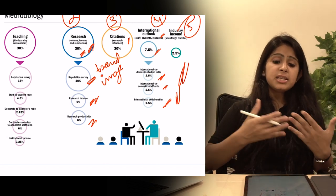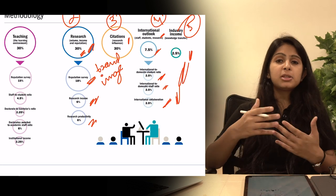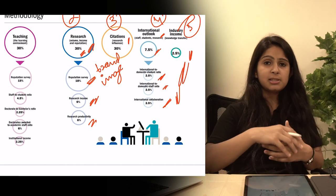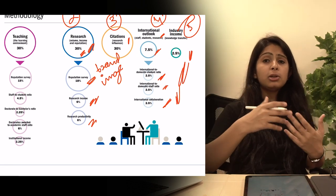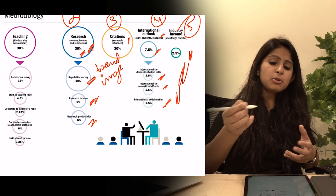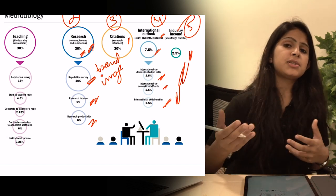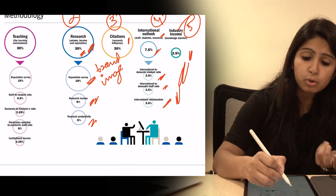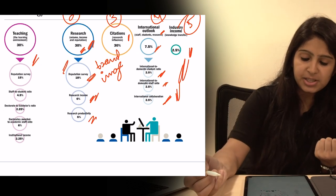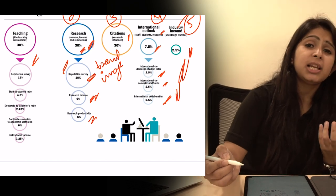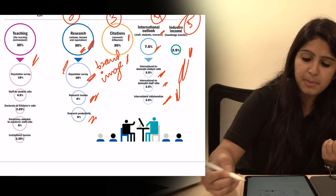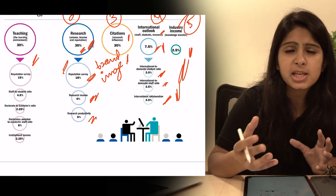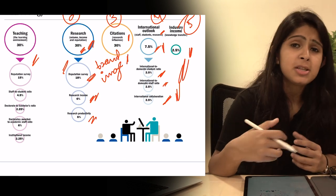So guys, these were 5 points of methodology that Times Higher Education follows to analyze universities. So I hope this video will be useful. So guys, if you notice and talk about Indian universities, they hold good positions in teaching as well as research, but areas where they lack are citations impact and international outlook. So Indian universities, it is very important to work in these two areas.